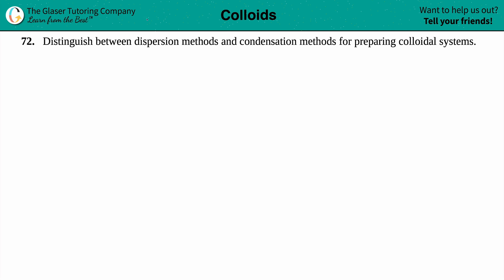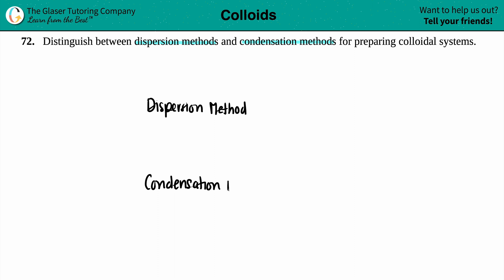Number 72: distinguish between dispersion methods and condensation methods for preparing colloidal systems. These are two different types of methods that we can use to make a colloid or colloidal system. They are opposites of each other, so if you can memorize one of them, chances are you'll be able to get the other one.